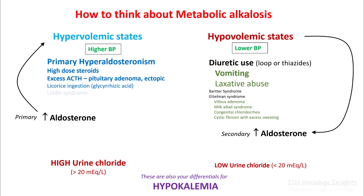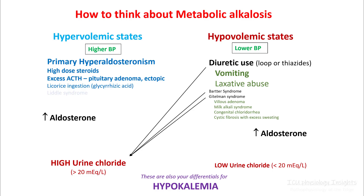Urine chloride in hypervolemic state is high and in hypovolemic state is low. However, patients with diuretic use and Bartter and Gitelman syndrome have a problem with the sodium and chloride channels, so they will be losing a lot of chloride in the urine. These patients would be hypovolemic but would have high urine chloride.